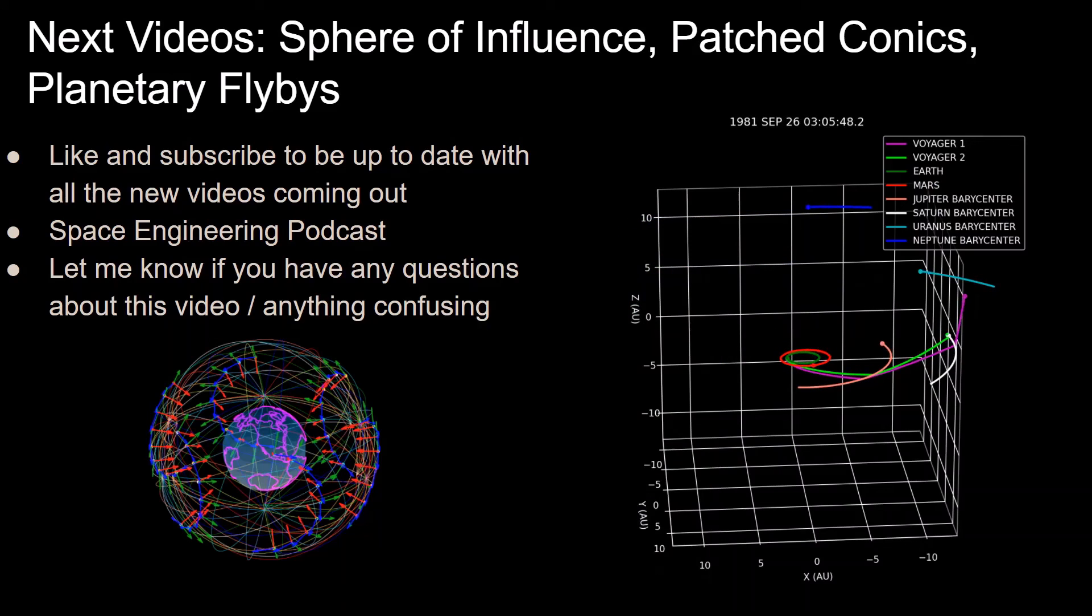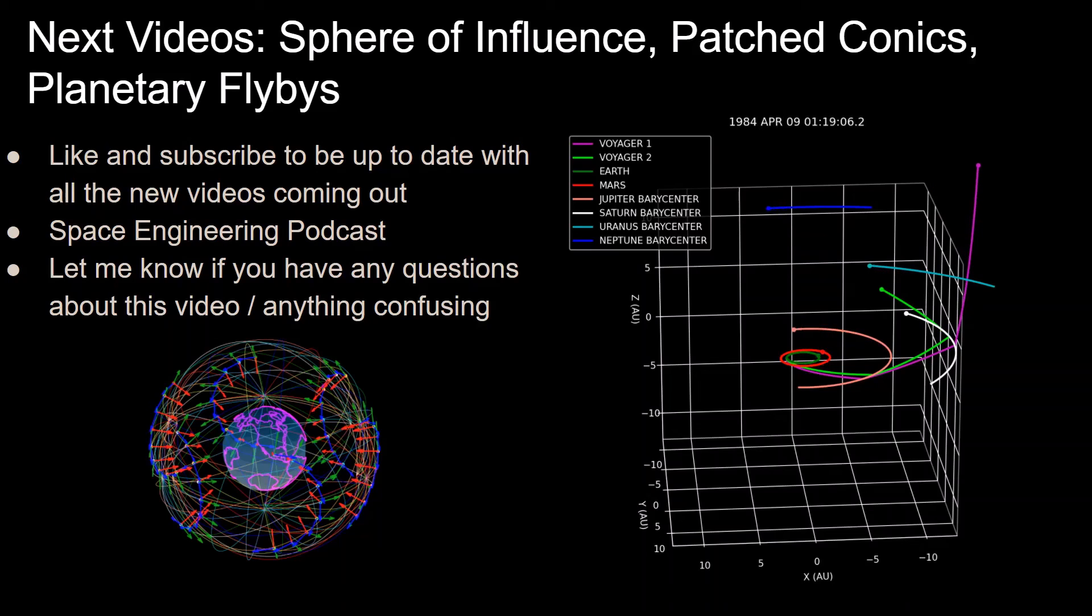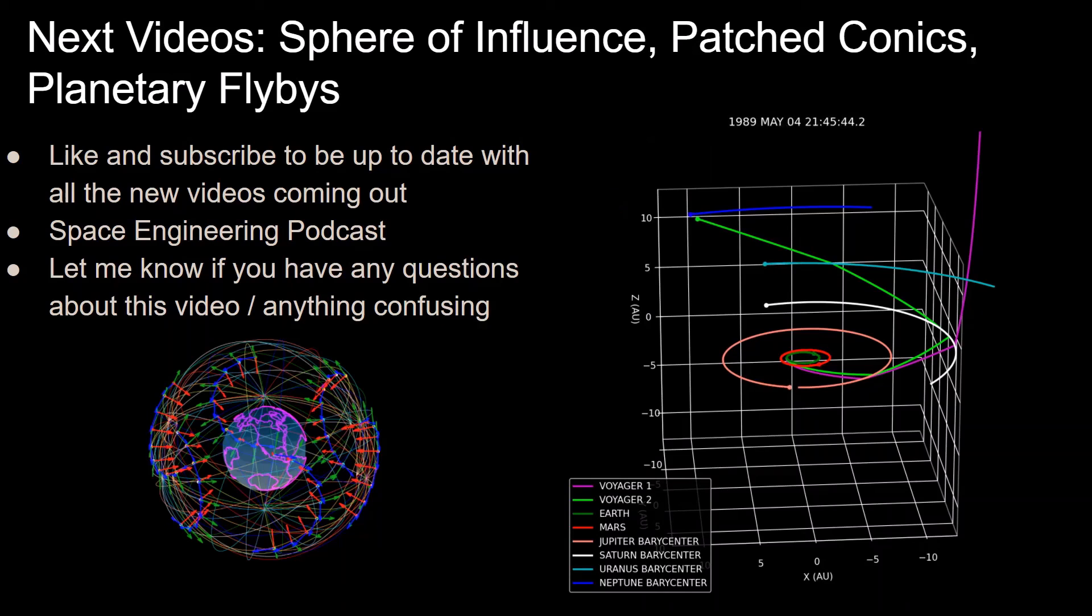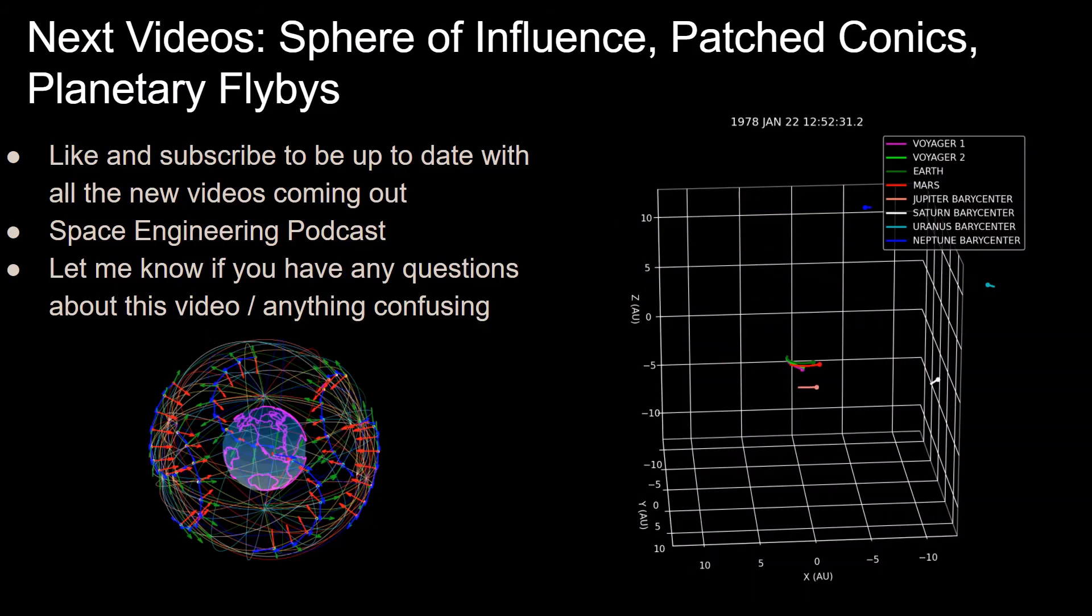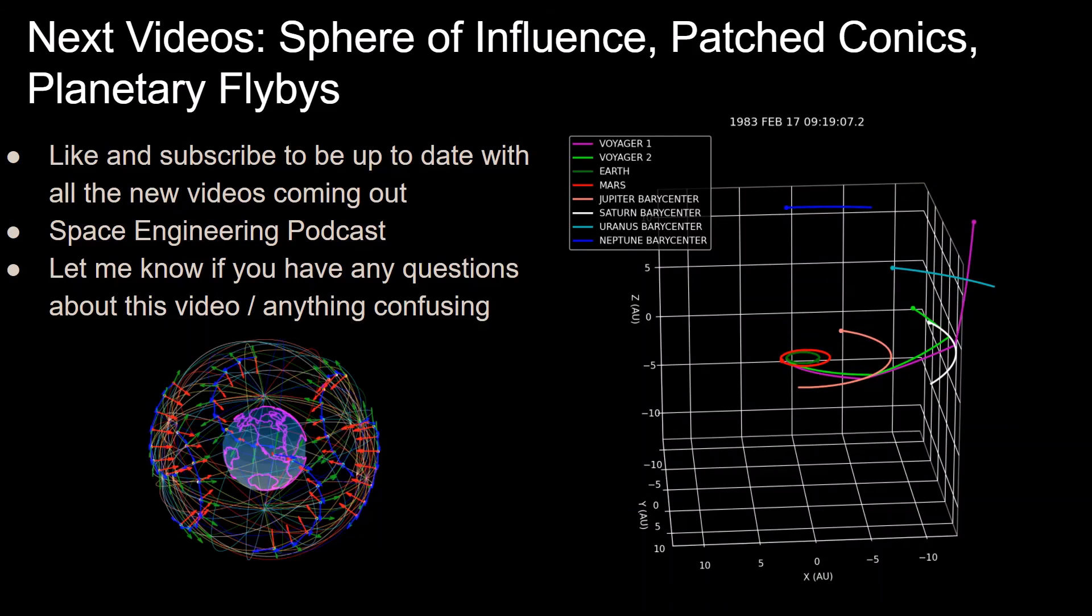And let me know if there was anything confusing about hyperbolic trajectories that I didn't cover. I certainly didn't cover everything, and I plan to cover more in the coming videos, which will be going over Sphere of Influence, Patch Conics, and then Planetary Flybys, just like the Voyager trajectories did. So that's pretty much it for this video. Leave any questions in the comments, and thank you for watching.